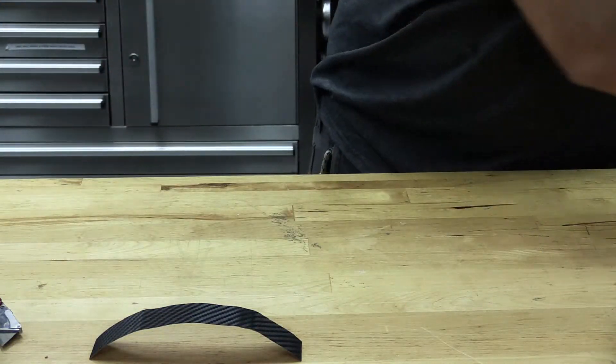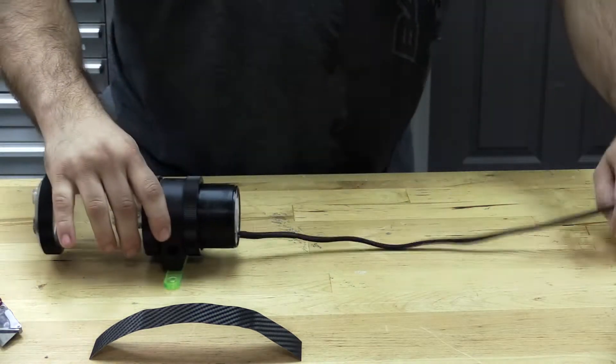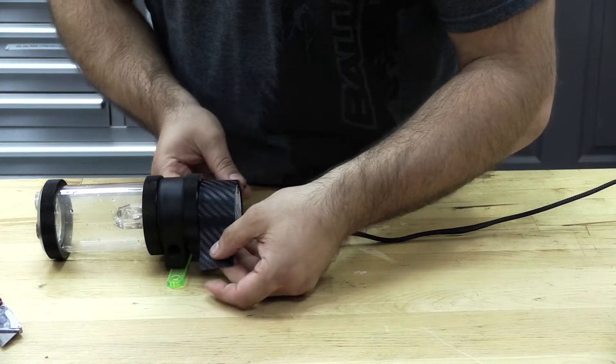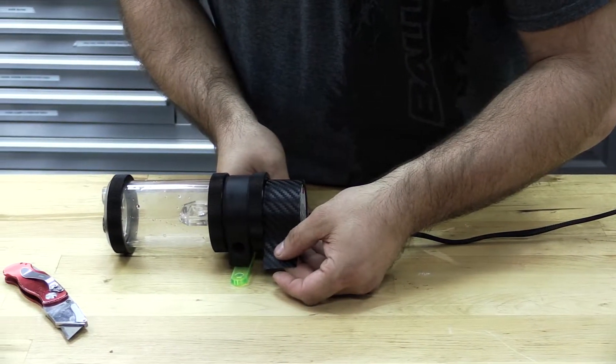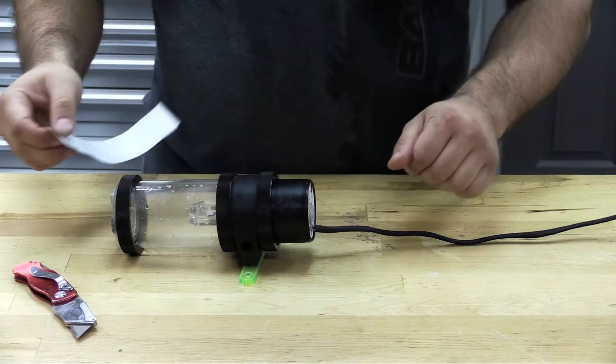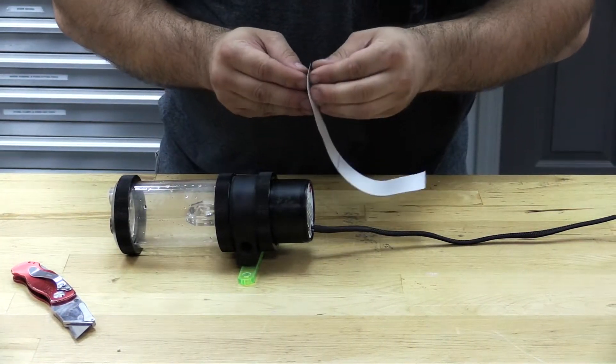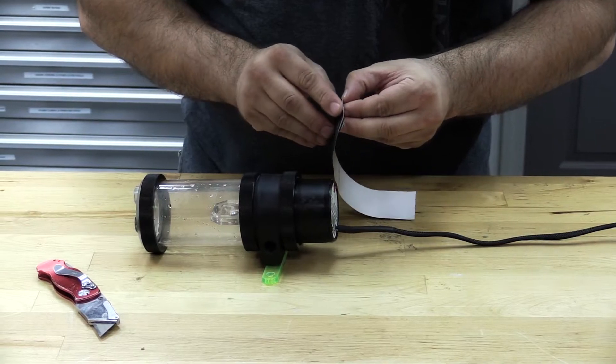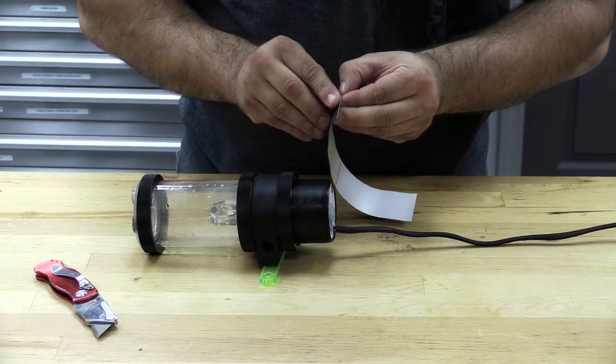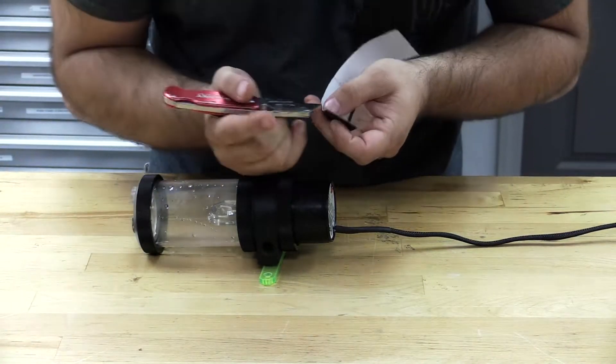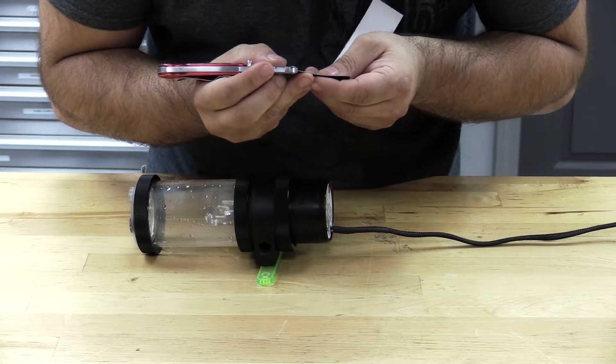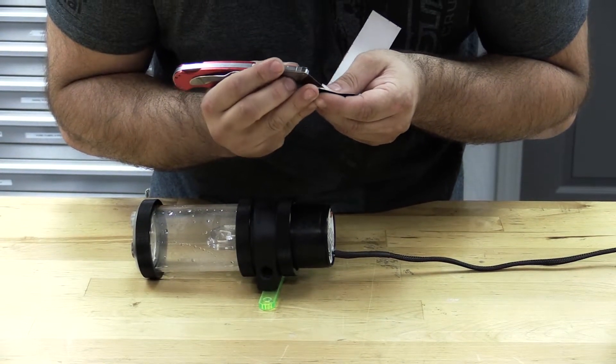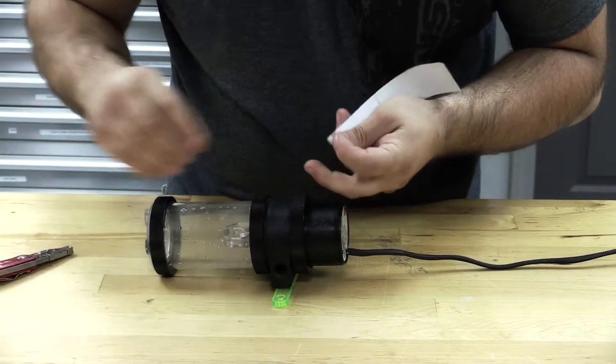And we'll wrap the pump. Go ahead and make sure the size is just about right. Now we want to peel the backing off of this guy. Be very careful. Sometimes you have to use the razor blade to get it separated. Just like that.